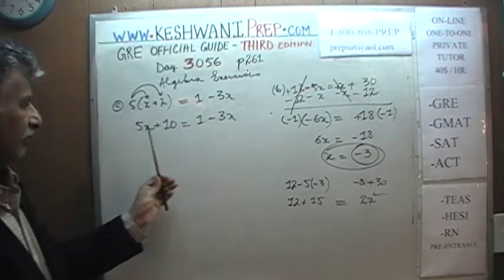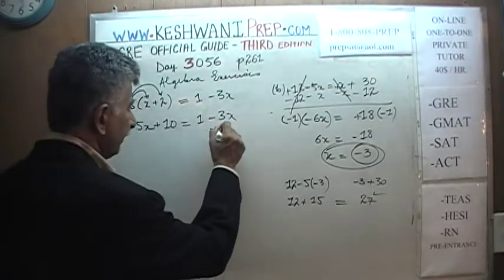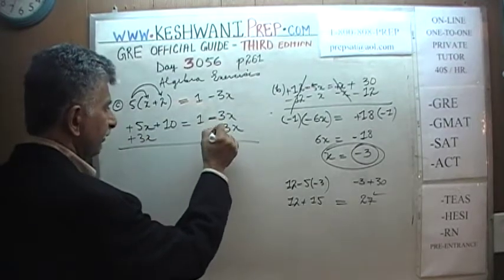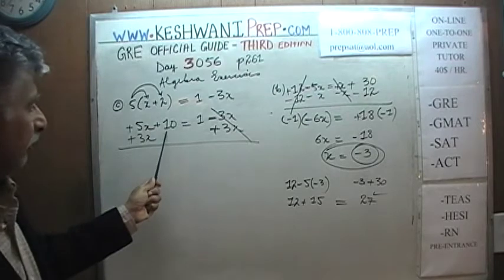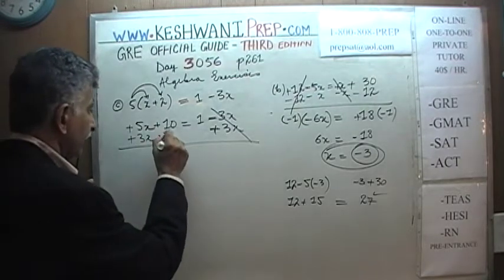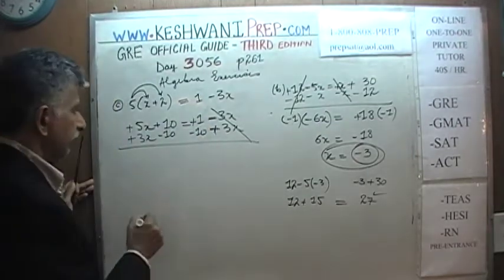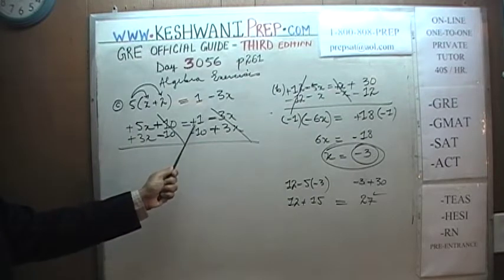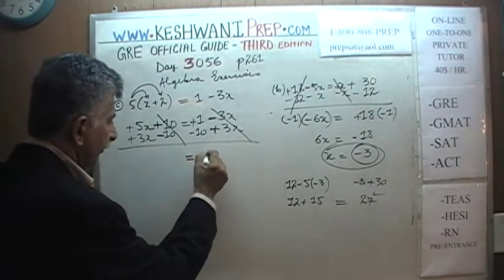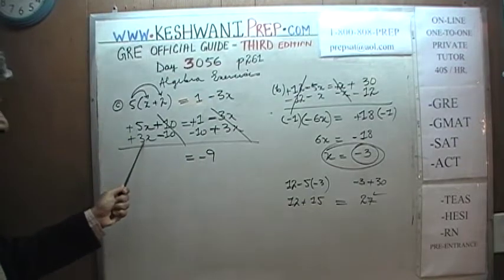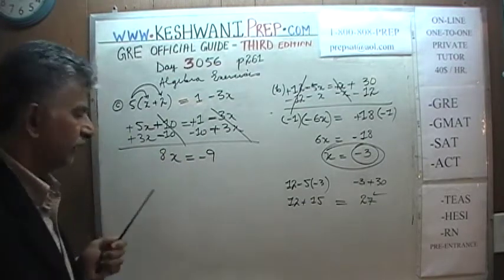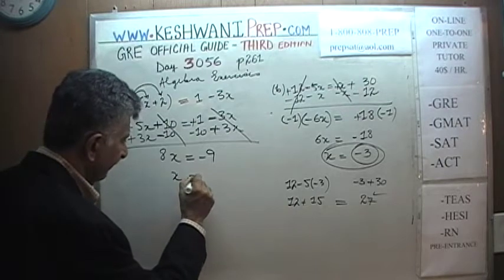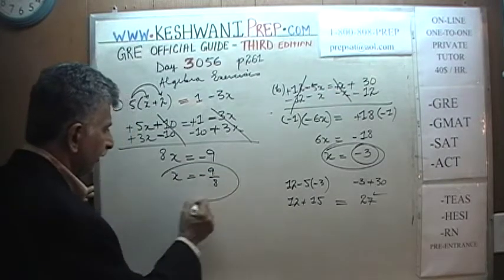Let's bring the negative 3x to this side by adding positive 3x to both sides — the 3x terms cancel. Now subtract 10 from both sides. Positive 1 minus 10 gives negative 9. We have 5x plus 3x which is 8x. Dividing both sides by 8, x equals negative 9 over 8. A very peculiar answer.